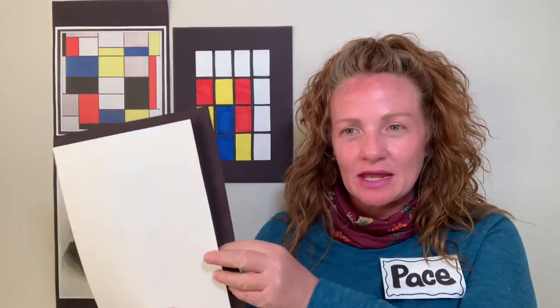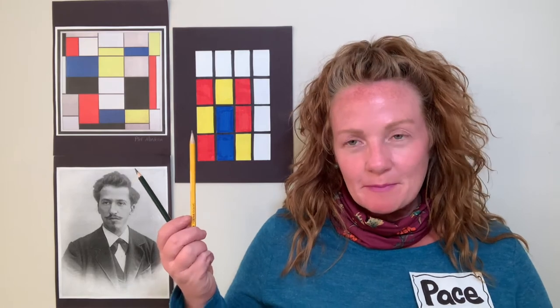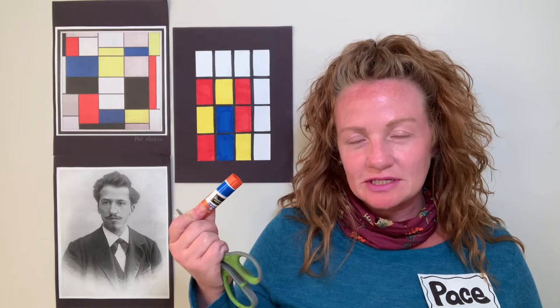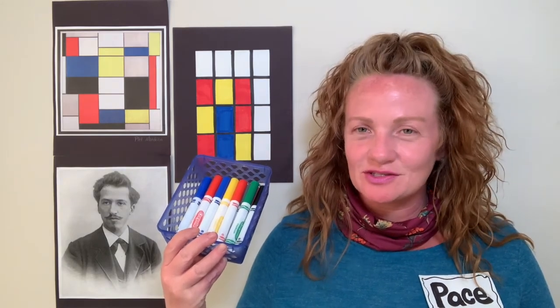Follow me so we can get our supplies. You are going to need one sheet of white paper and one sheet of black paper. You will also need a couple of pencils and an eraser, a pair of scissors and a glue stick — or a bottle of glue — and your box of markers. Go ahead and get your supplies and we can get started.